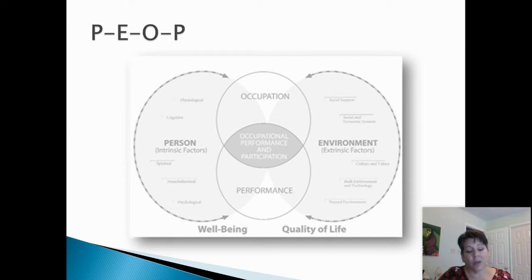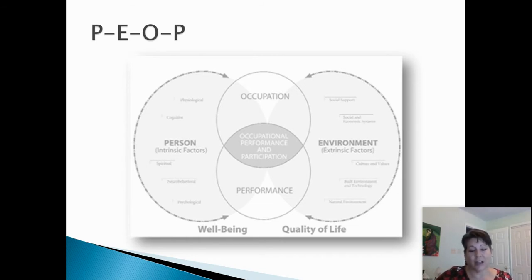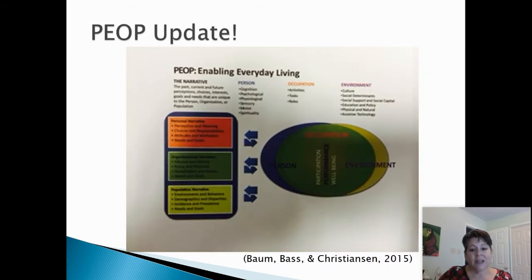We also notice through this visual model the added outcomes of occupational intervention: well-being and quality of life. Notice these are also incorporated in the occupational therapy practice framework. Here is the newer visual model, and this is the one that our 2020 Cole and Tofano textbook uses.